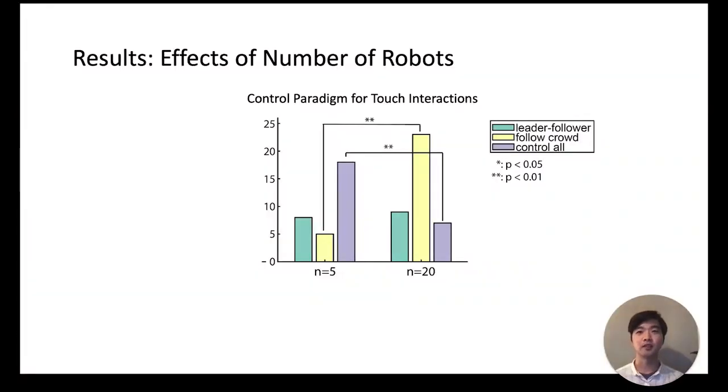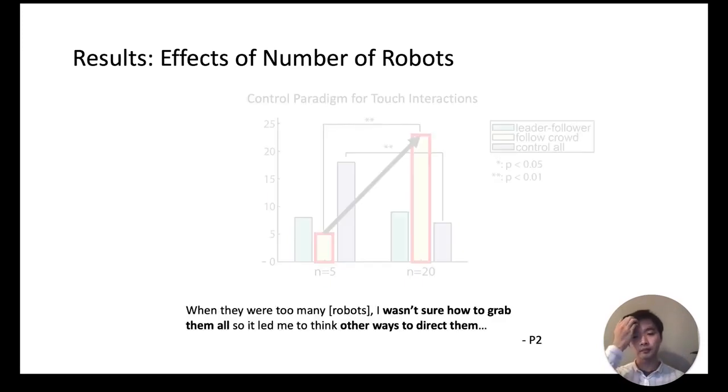For touch interactions we observed this shift in control paradigm as the number of robots is increased. Instead of trying to control all of the robots, participants were more likely to only control a subset of them and expected the rest to follow. Participant P2 noted that 'when there were too many, I wasn't sure how to grab them all so it led me to think other ways to direct them.'